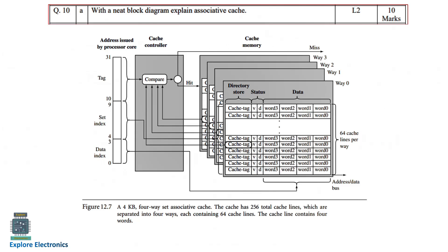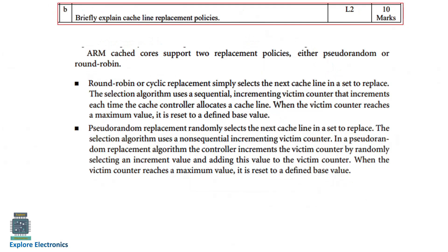The last question is: briefly explain cache line replacement policies. In ARM, there are two methods: pseudo-random and round-robin. You need to explain both the pseudo-random method and the round-robin method used for cache line replacement policy.